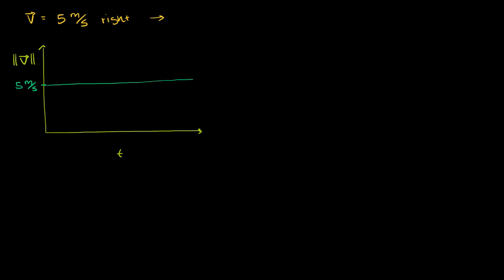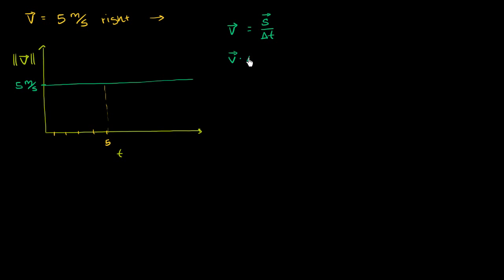My question to you is: how far does this thing travel after 5 seconds? So after 5 seconds — 1, 2, 3, 4, 5 seconds right over here — how far did this thing travel? We could think about it two ways. We know that velocity is equal to displacement over change in time, and displacement is just change in position over change in time.